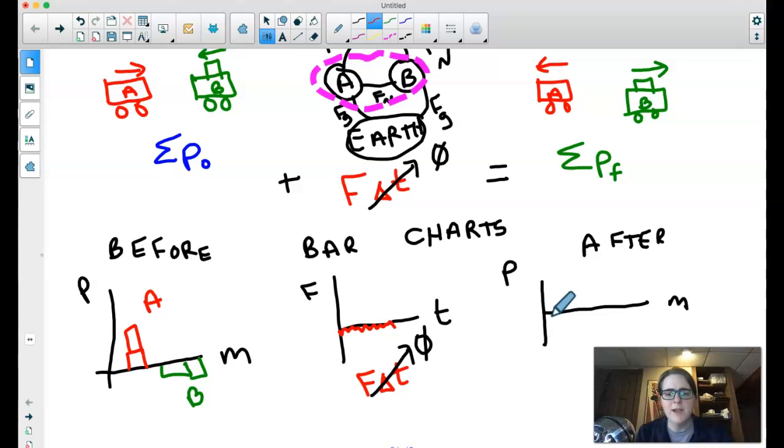And then in the after, I would do something very similar. In this case, A is now moving in the direction I've been treating as negative, so I would give it a negative bar for the momentum. And then I would give B a positive bar, but I would make it wider. So if you're using bar charts, how tall the bar is tells you how fast the object's moving. How wide the bar is tells you how much mass it has.